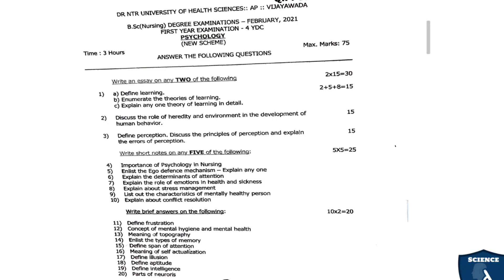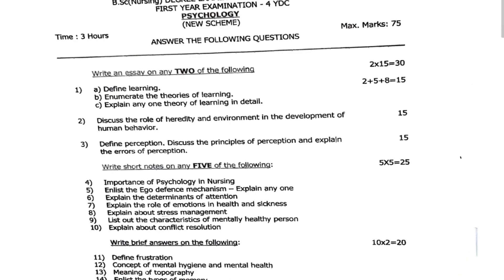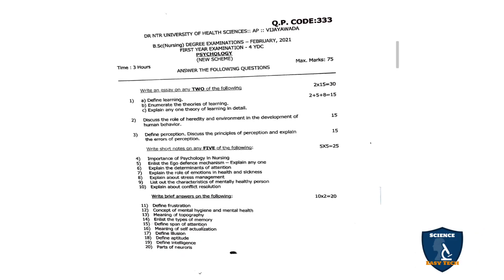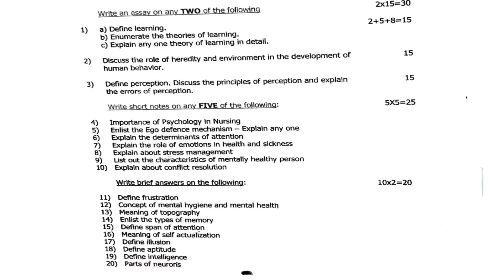Psychology February 2021 question paper — this is the main exam; the August paper is the supply exam. Essay questions: first, define learning, enumerate the theories of learning, and explain any one theory in detail — 1a is 2 marks, 1b is 5 marks, 1c is 8 marks, totaling 15 marks. Second question: discuss the role of heredity and environment in the development of human behavior — 15 marks. Third question: define perception, discuss the principles of perception, and explain the errors of perception.